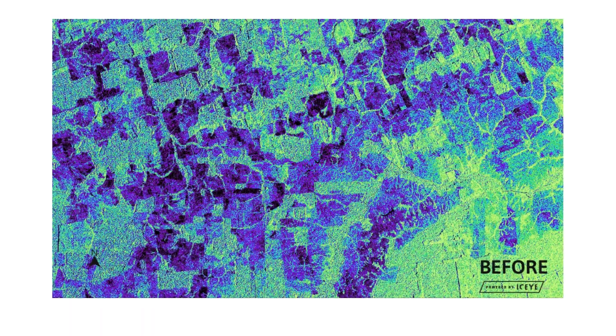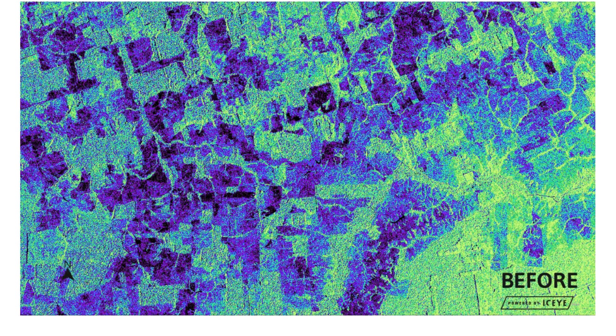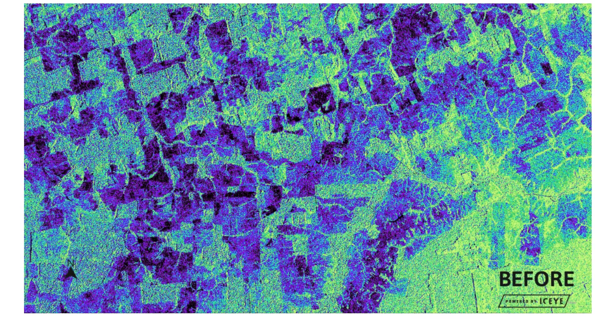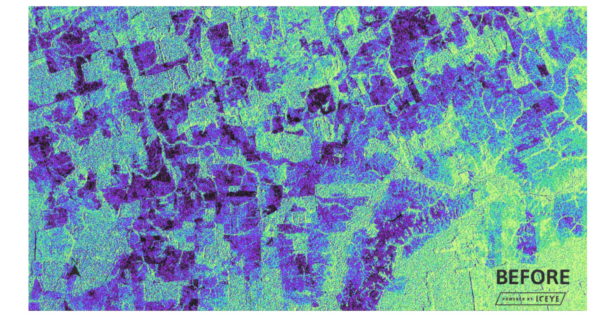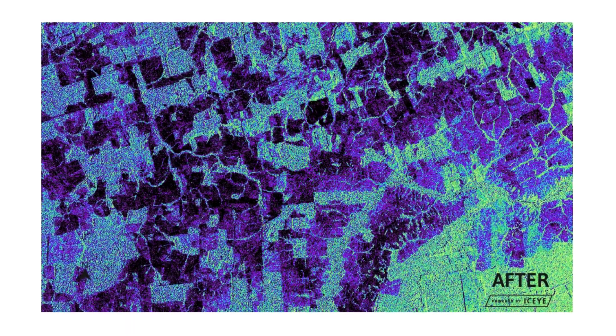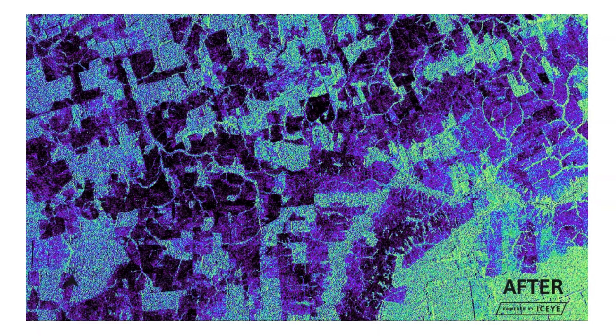3. Deforestation. In Acre, Brazil, within the Amazon rainforest, there is deforestation mapped clearly by SAR data in just an 11-day period. Deforestation between July 22 and August 2, 2021 is indicated by the black and magenta colors.